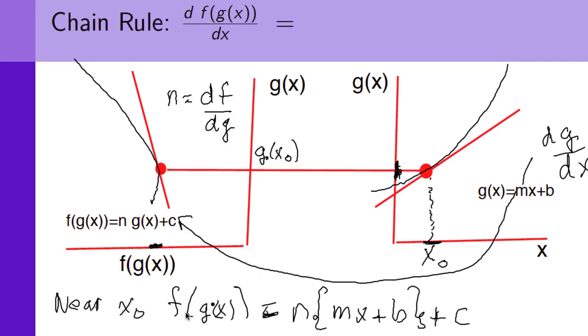Now, you can see that f of g of x near the point x naught, in terms of the dependency on x is n times m. If I differentiate this with respect to x, I just get n times m. So, that's how f of g of x changes with x.